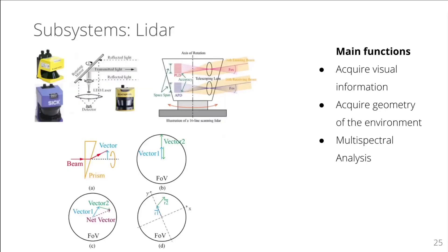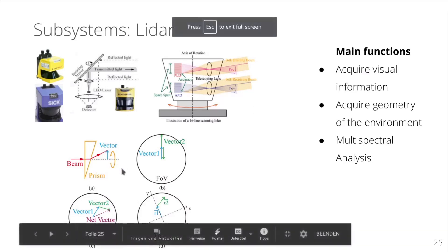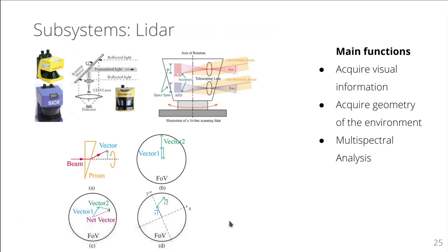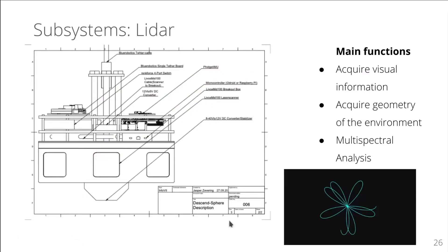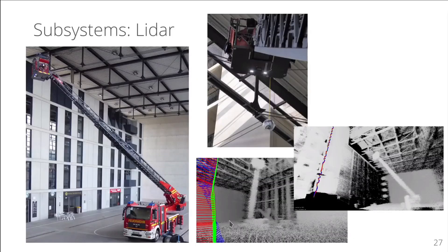A key component is the LIDAR subsystem. After an evaluation, we have decided against a conventional LIDAR with a rotating mirror or a multi-plane LIDAR. Instead, we suggest a so-called prism scanner where two rotating prisms are used to deflect the laser beam; the resulting scan pattern is shown at the bottom right. The main functions of the LIDAR subsystem are to acquire direct 3D geometric information of the environment and to perform multispectral analysis. A prototype prism-based LIDAR system has been tested to evaluate the feasibility of scan-matching-based SLAM algorithms.